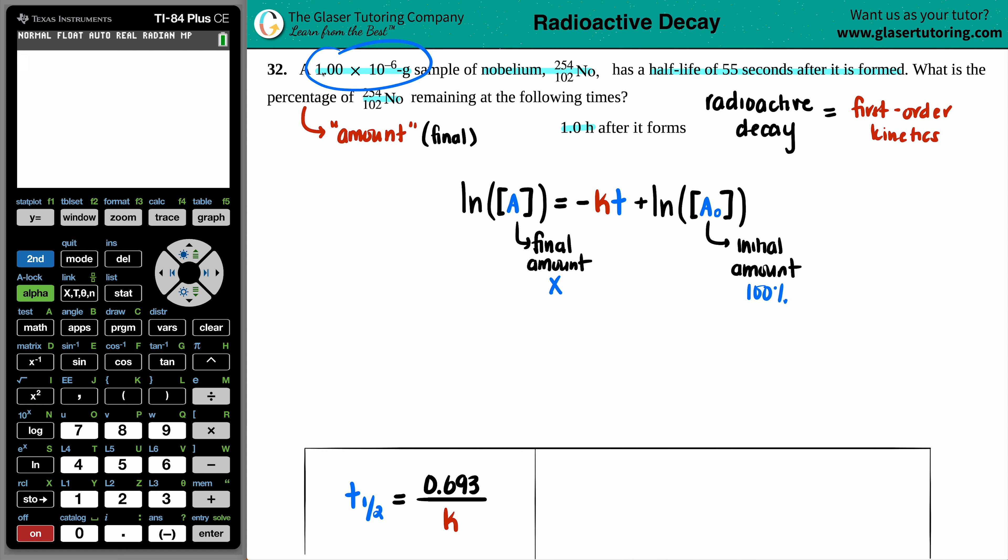Sometimes they will give you context but not the actual values. Now the question is, where am I going to put this 1.00 times 10 to the negative 6 grams? It doesn't matter, not going to use it. If they're asking for percentages, why put in a gram sample? Make it easy for yourself.